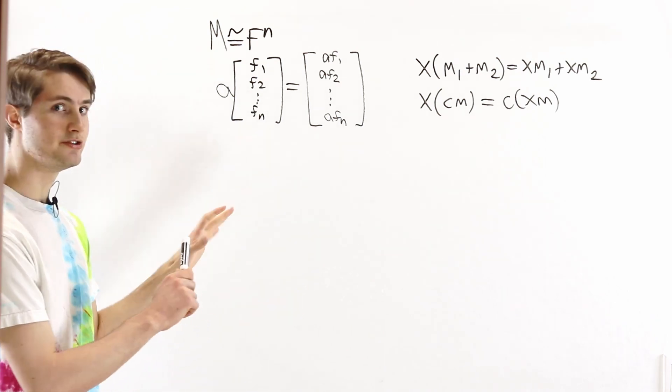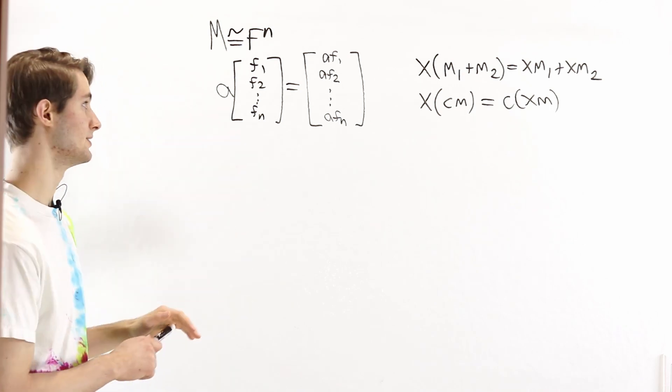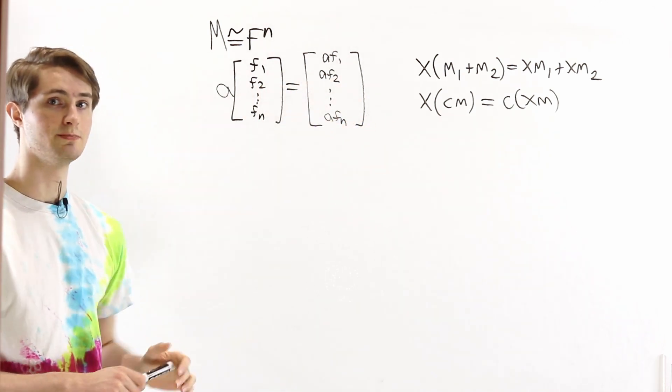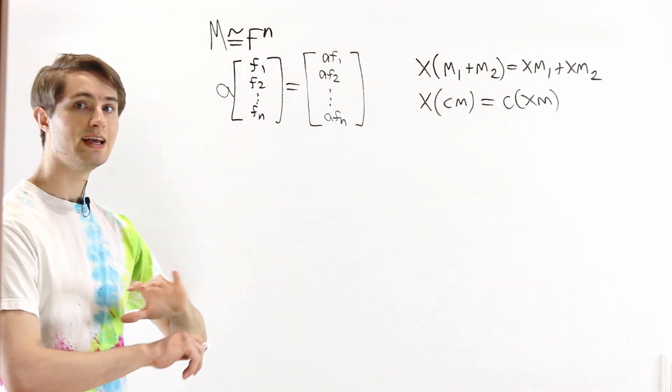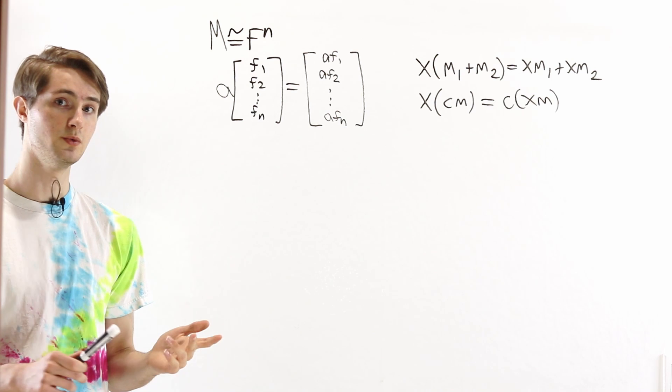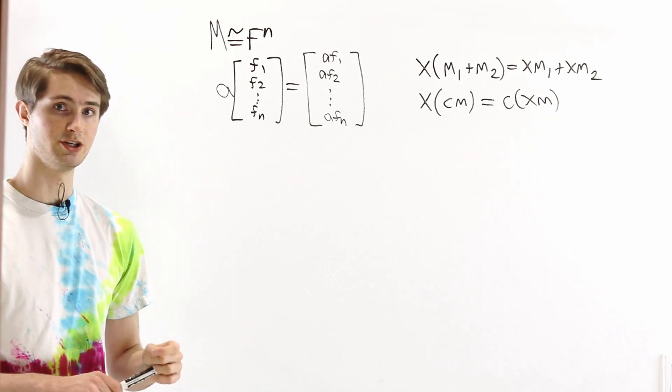And it turns out that if you look at the module axioms, there aren't any other constraints that we need to place on the linear transformation.